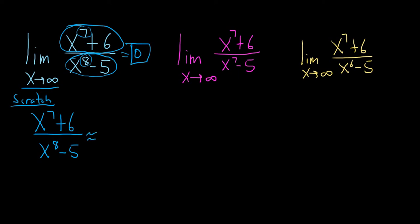So this is approximately equal to x to the 7 over x to the 8, which is equal to 1 over x. And so now it's more clear that when x gets really big, this gets really close to zero. This happens as x approaches infinity.